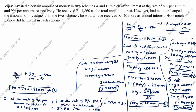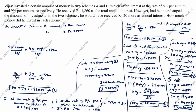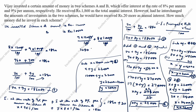So Y = 10000. Now we will check this answer. Vijay invested rupees 12000 in scheme A and rupees 10000 in scheme B. Verification: 8 × 12000/100 + 9 × 10000/100 = 960 + 900 = 1860. Correct! And 9 × 12000/100 + 8 × 10000/100 = 1080 + 800 = 1880. Correct! Thanks for watching this video.